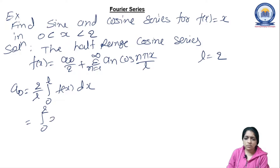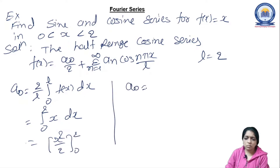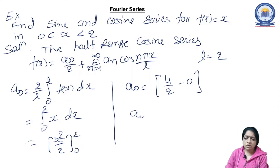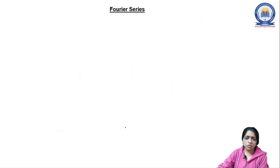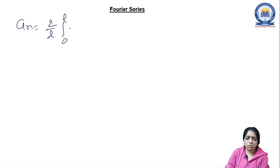With limits 0 to 2 and f(x) = x, we integrate x dx giving x²/2 with limits 0 to 2. Substituting the upper limit: 4/2 − 0 = 2, so a₀ = 2. For aₙ: the formula is (2/L) ∫₀ᴸ f(x) cos(nπx/L) dx. With L = 2, both 2's cancel and limits are 0 to 2, integrating x · cos(nπx/2) dx.